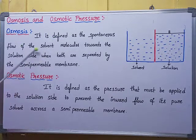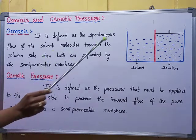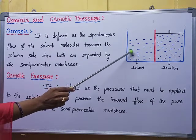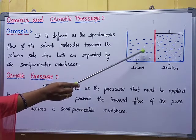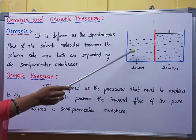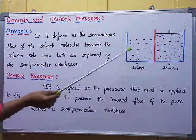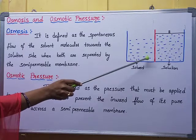Osmosis is defined as the spontaneous flow of solvent molecules towards the solution side when both are separated by a semipermeable membrane. The solvent molecules spontaneously flow from the solvent side to the solution side because the semipermeable membrane allows only solvent molecules. As this process takes place, the solvent level decreases and the solution level increases. This process is called osmosis.